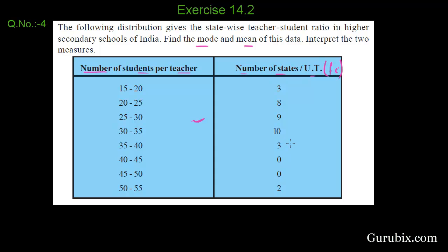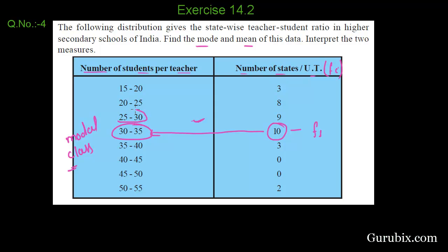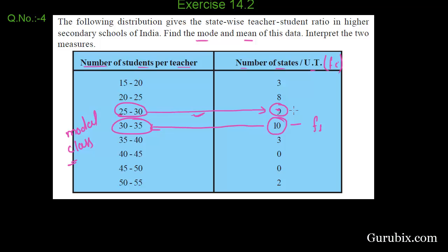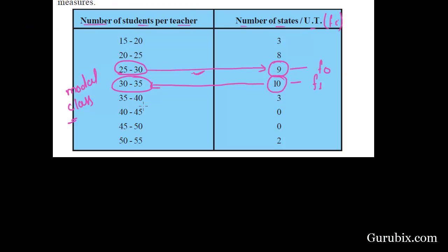We can see in the Fi column the highest frequency is 10, so it is F1 and the class corresponding to it is our modal class. The frequency of the class which comes just before the modal class interval is called F0. The 25 to 30 interval comes just before the modal class interval and its corresponding frequency is 9.